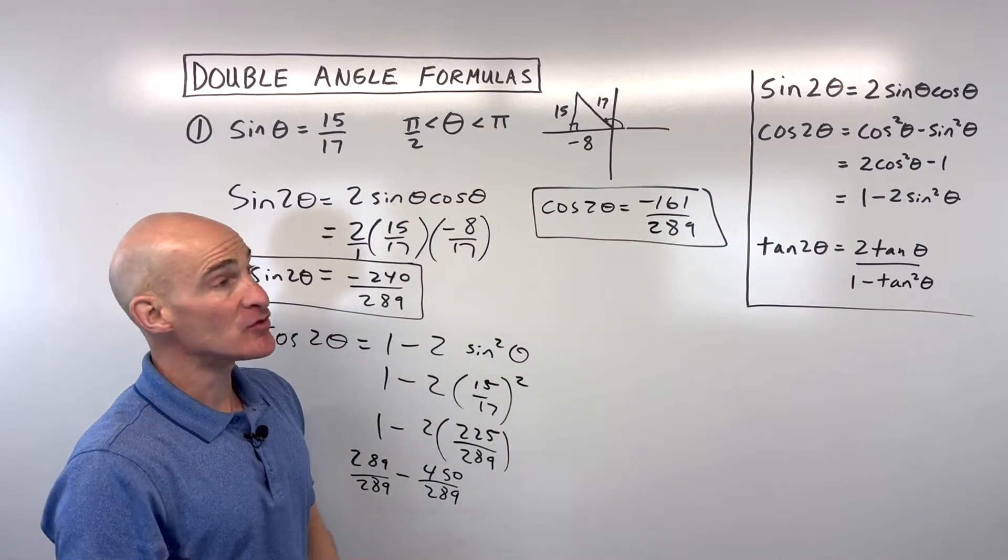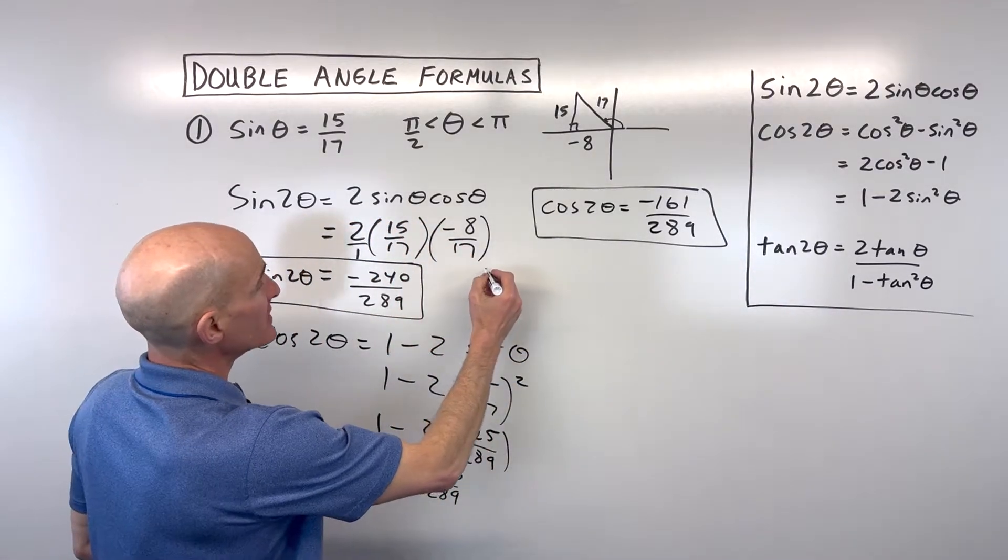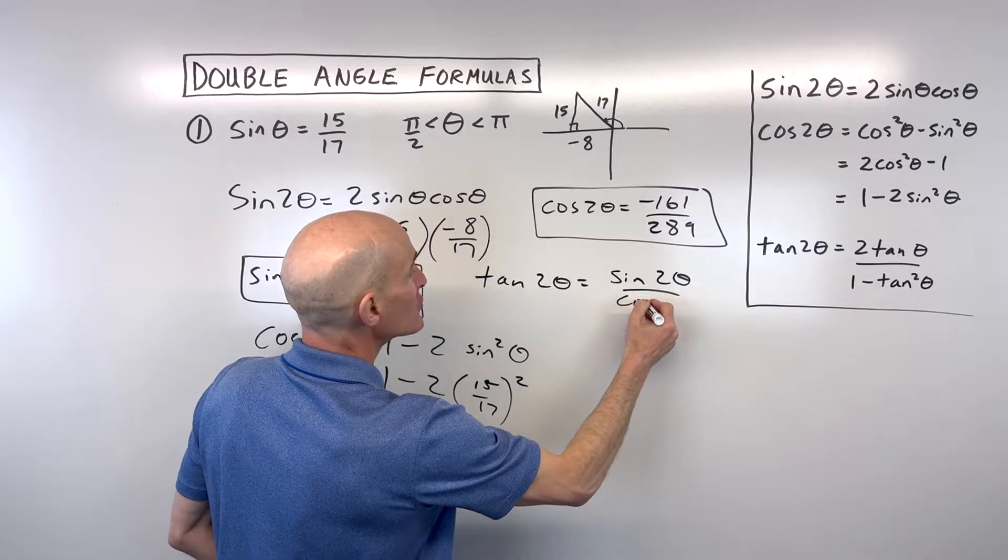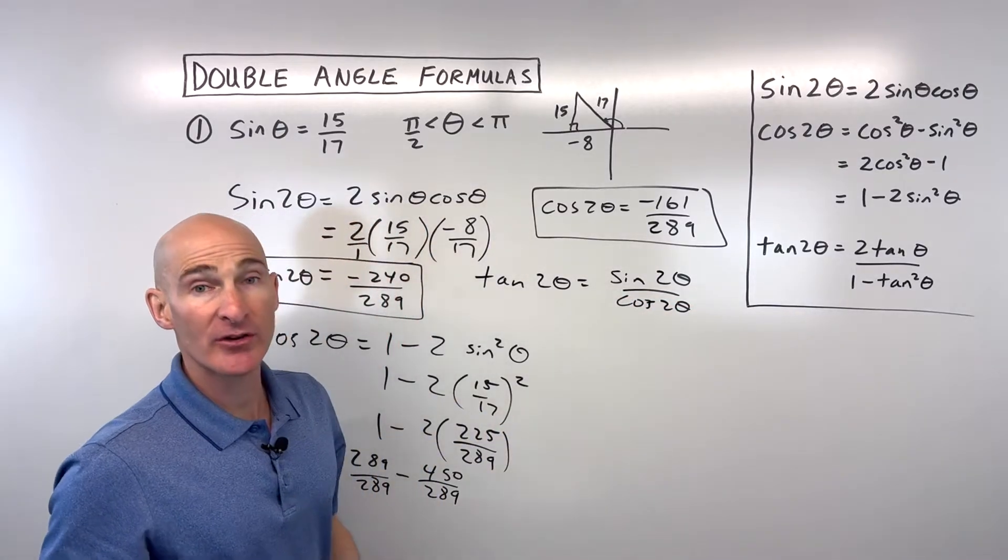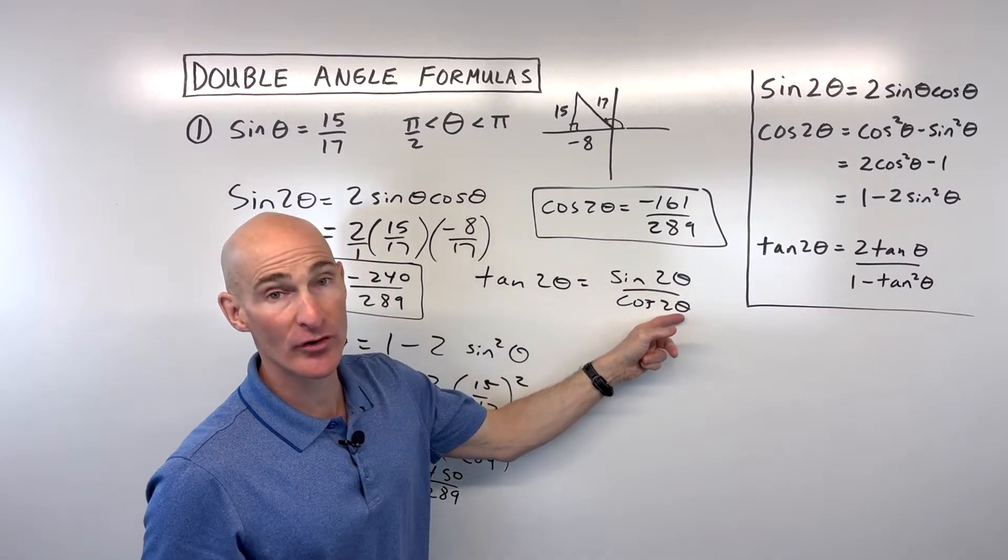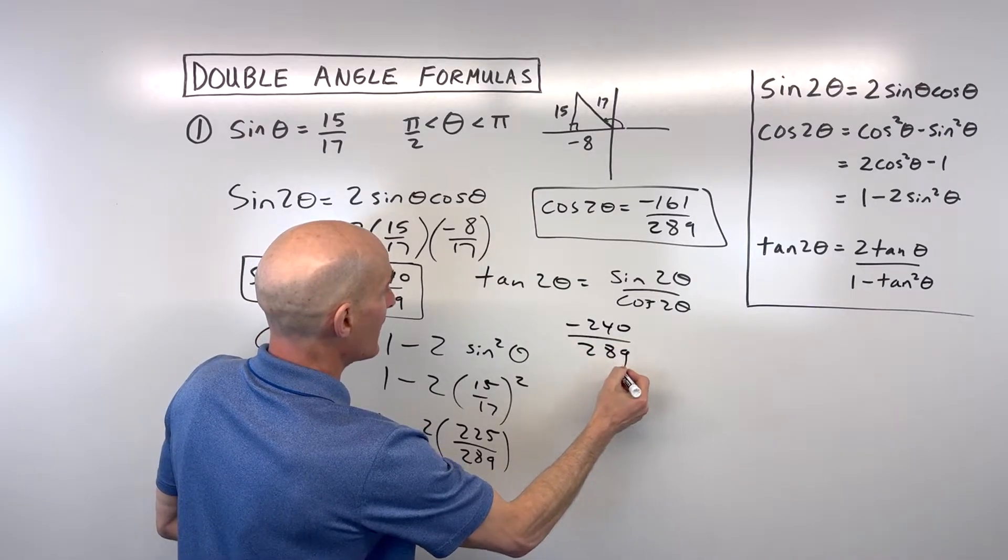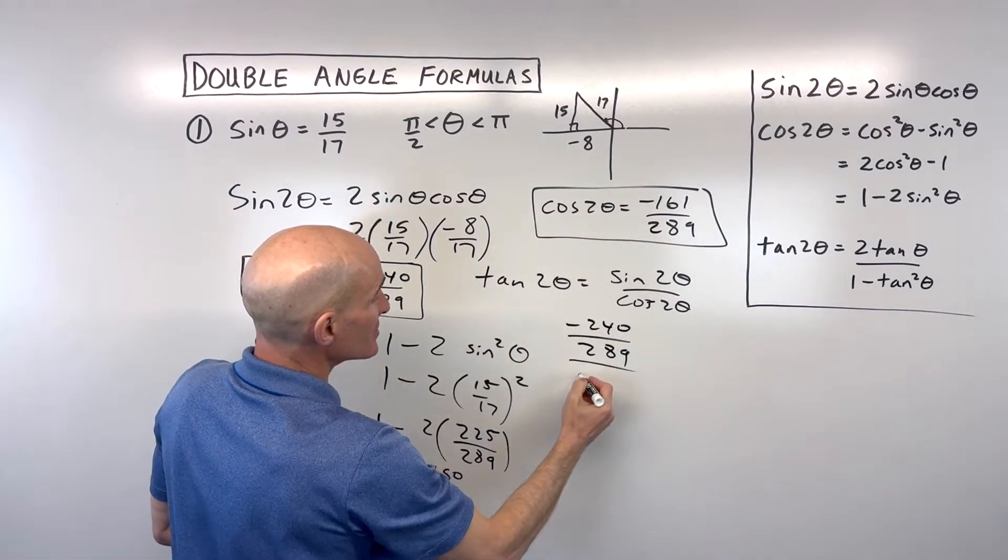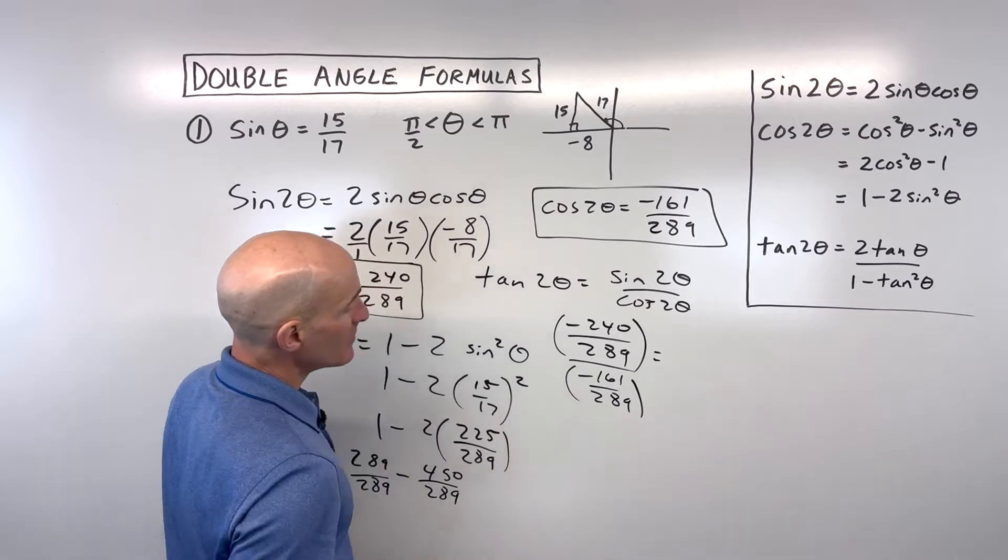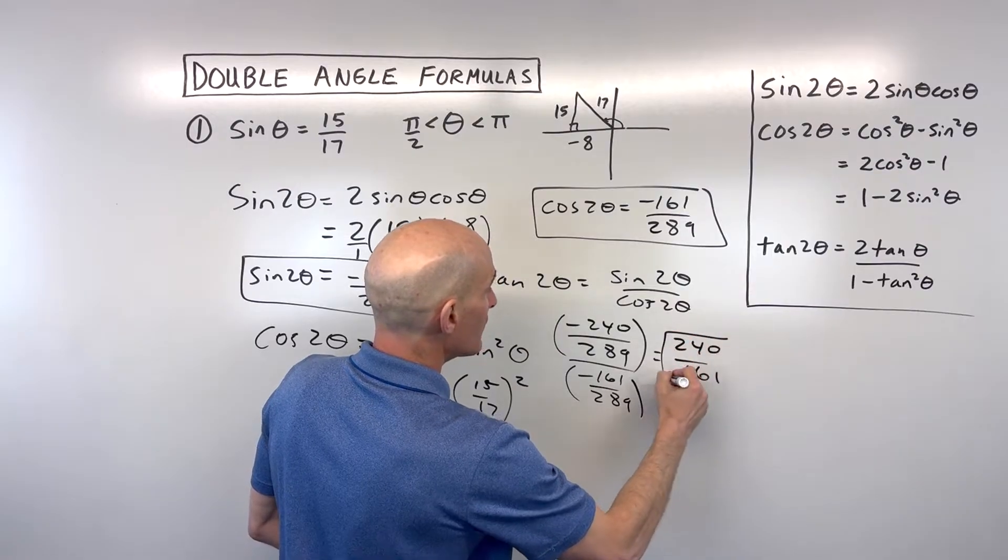Now if you want to calculate tan 2θ, you've got a couple options. One is you can use this formula here, which we're going to do. But you can also think of tan 2θ equals sin 2θ over cos 2θ. So if we were to take negative 240/289 divided by negative 161/289, that comes out to 240/161. That's the tangent of 2θ.